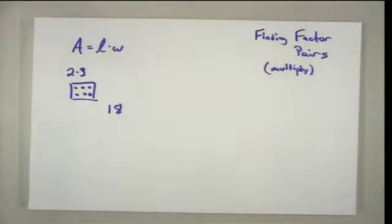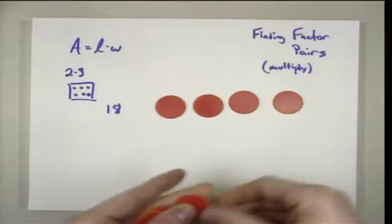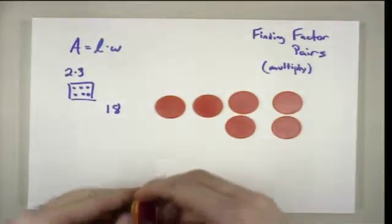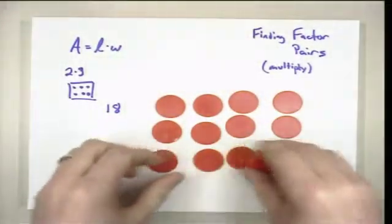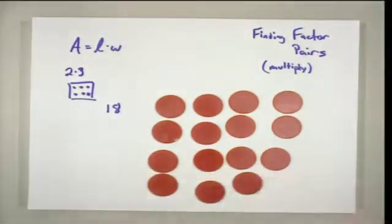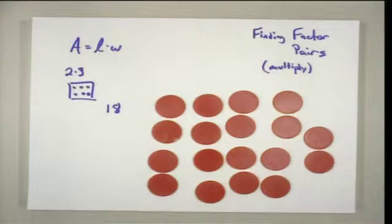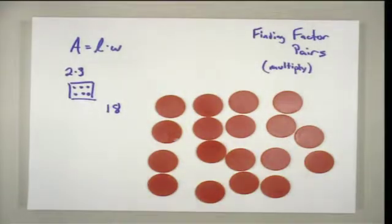So I've got 18 values here, 18 pieces. The thing I have to do with these 18 pieces is create a rectangle so that I can figure out what the length and the width are.